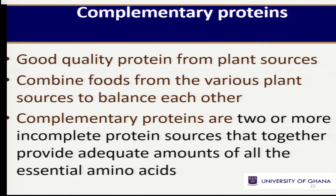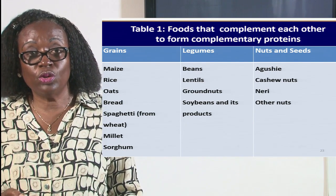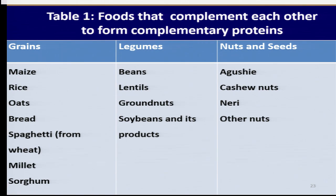So for us to make good quality protein, we need to diversify — not eating just one food. So if you eat beans and kenkey, you are able to make a complete protein because they complement each other. The table on the screen shows different foods from the grain groups, from the legume groups, and then also from the nuts and seeds. So when you eat from two or three groups at a meal, you are more likely to get a complete protein. We should know that plant proteins are not complete, so it is important to complement each other.